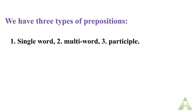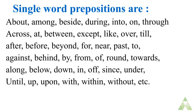We have three types of prepositions: number one is single word preposition, number two is multi-word preposition, and number three is participles. Single word prepositions, as we discussed, include words like between, on, and in. The single word prepositions are: about, among, beside, during, into, on, through, across, at, between, except, like, over, till, after, before, beyond, for, near, past, to, against, behind, by, from, off, round, towards, along, below, down, in, since, under, until, up, upon, within, without, etc.